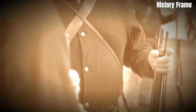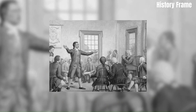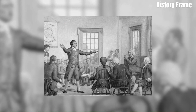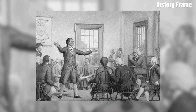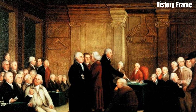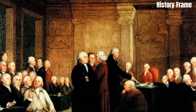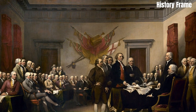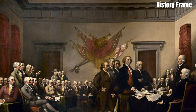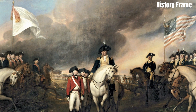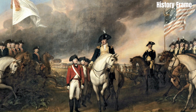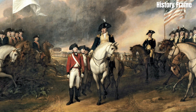Resistance to British rule grew in the colonies, and in 1774, representatives from 12 colonies convened the First Continental Congress in Philadelphia to discuss their grievances and seek a peaceful resolution with the British government. However, as tensions escalated, armed conflict broke out in April 1775 at Lexington and Concord in Massachusetts. These skirmishes marked the beginning of the Revolutionary War.